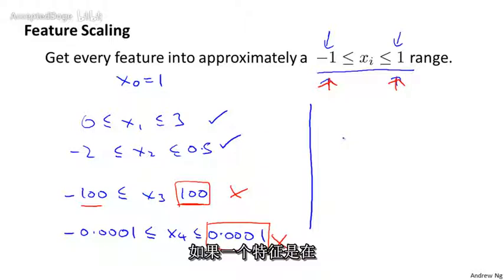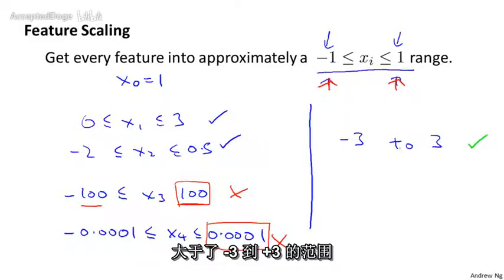...but the one that I use is that if a feature takes on the range of values from, say, -3 to +3, I usually think that should be just fine. But maybe if it takes on much larger values than +3 or -3, I might start to worry.